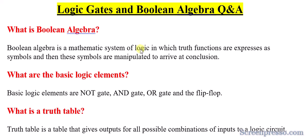In digital electronics, logic means for any operation there will be a zero or one. For each zero and one given as input, some logic is implemented and we get an output. For example, adding two numbers or switching a light on or off requires performing some logical operations to arrive at the output.